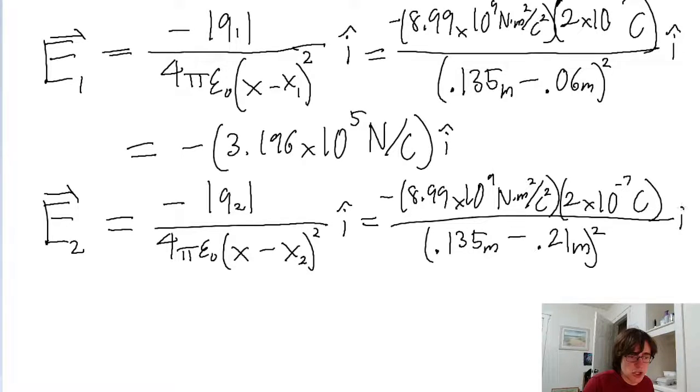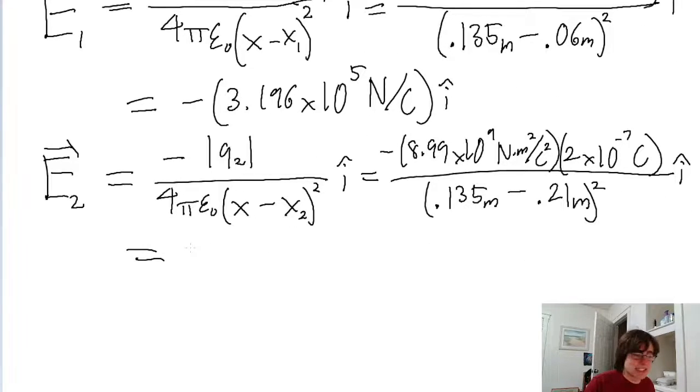Minus the 21 centimeter position for particle 2. So that's 0.21 meters. Again, that's squared with an i hat unit vector. And putting all this into a calculator, we find the exact same magnitude we found before. Of negative 3.196 times 10 to the power of 5 newtons per coulomb in the i hat direction.